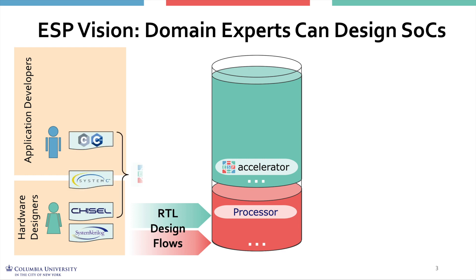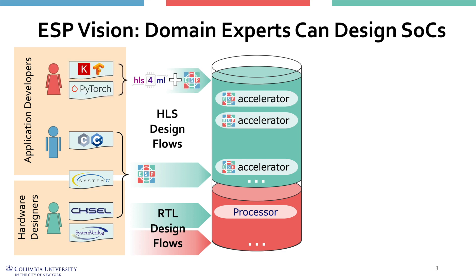Second, designers can leverage the ESP automation tools in combination with commercial high-level synthesis tools to create accelerators from specifications in C-like languages like C++ or SystemC. Third, for the specific but important machine learning application domain, ESP integrates the open source HLS4ML flow, which allows application developers to generate the specification of accelerators as synthesizable input for HLS tools from models in Keras, TensorFlow, or PyTorch.